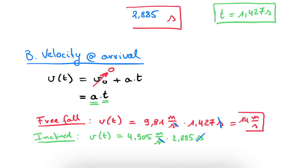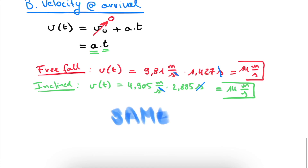Both velocities are actually the same — 14 m/s — whether the object free falls or slides across the inclined plane. This is no coincidence; it will always be the case for every inclined plane, whatever the angle or height. It has to do with the concept of conservation of energy, which we will cover in future videos. This was a simplified scenario without friction; if we included friction, some energy would go into heating the plane, resulting in a slower arrival velocity.